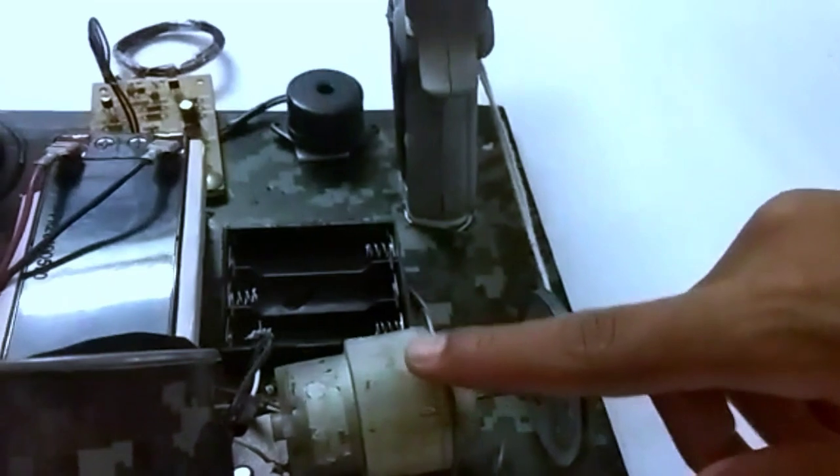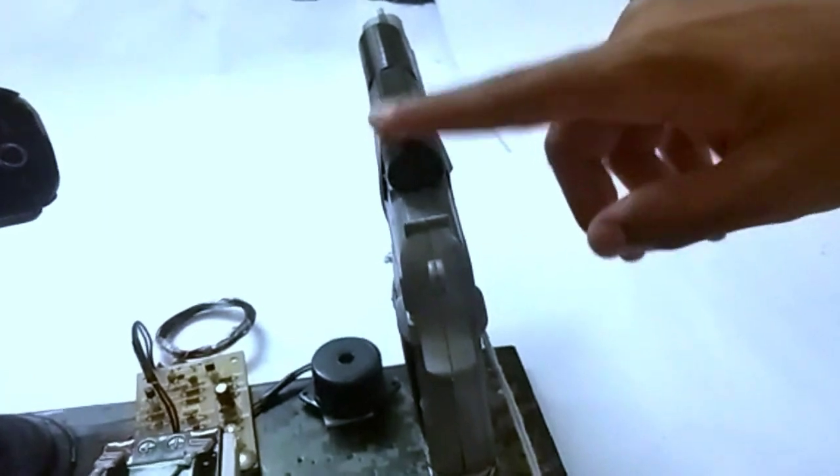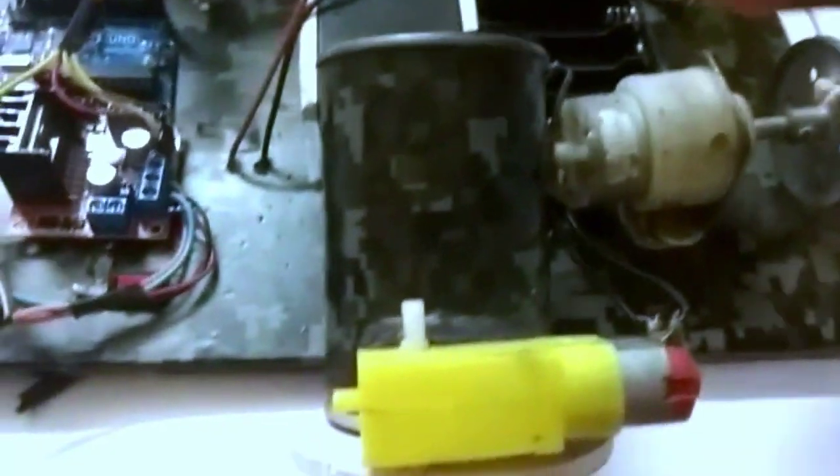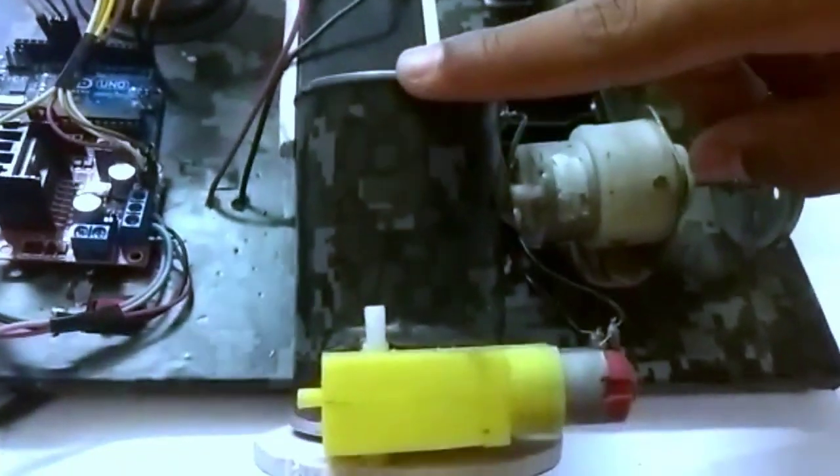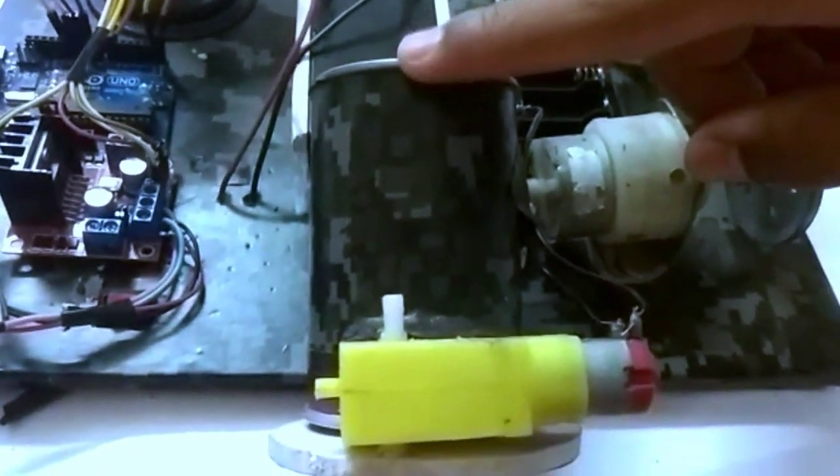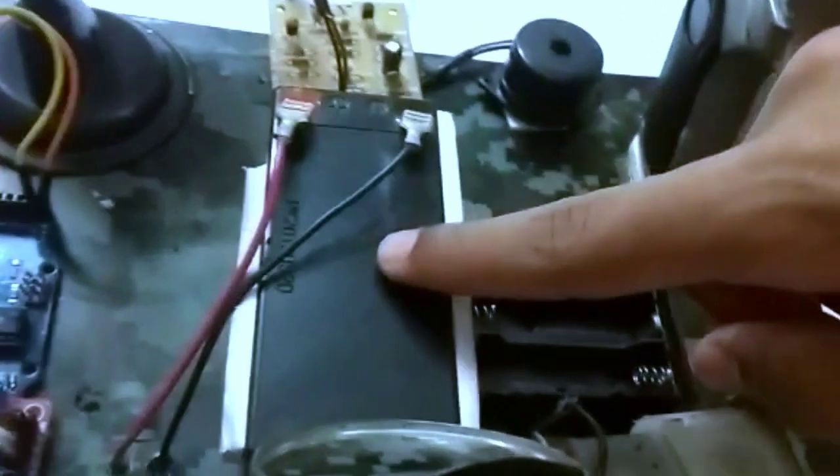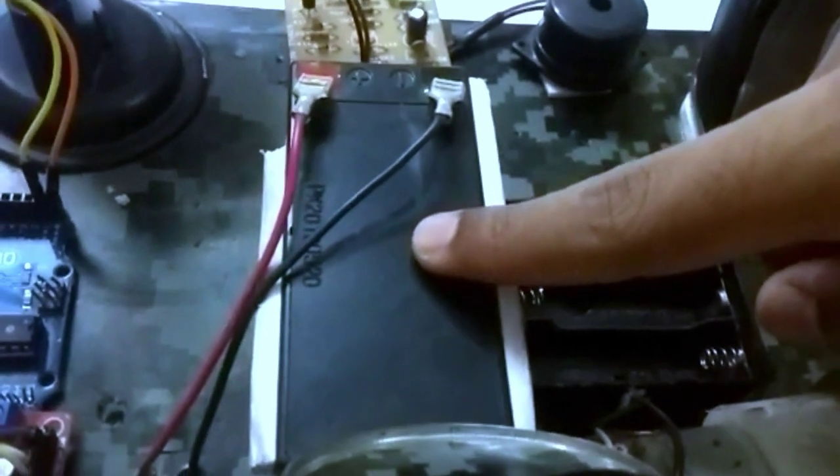Then here's a 150rpm motor and a pulley which helps in controlling the gun. Here's a torch which helps in night vision. Then this is a container which has marbles and nails which helps in puncturing the tires of the vehicle. And here's a 12V battery which helps in powering the robot.